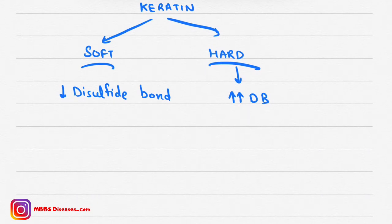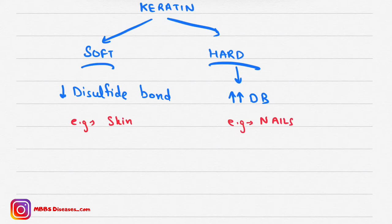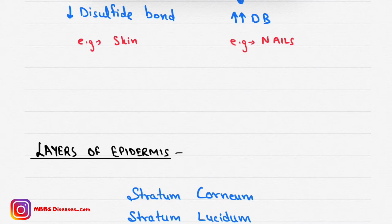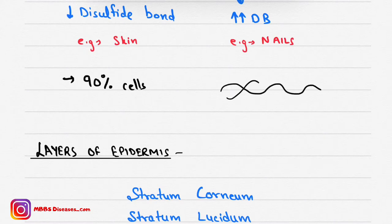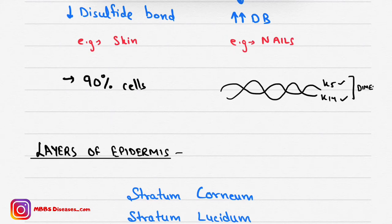An example of soft keratin is skin, and hard keratin is found in nails, because nails are hard and skin is soft. Keratinocytes are the most abundant cells in the epidermis, comprising 90% of epidermal cells. Keratin exists as heterodimers — for example, K5 and K14 form a dimer, and this K5/K14 pair is present in the stratum basale layer.